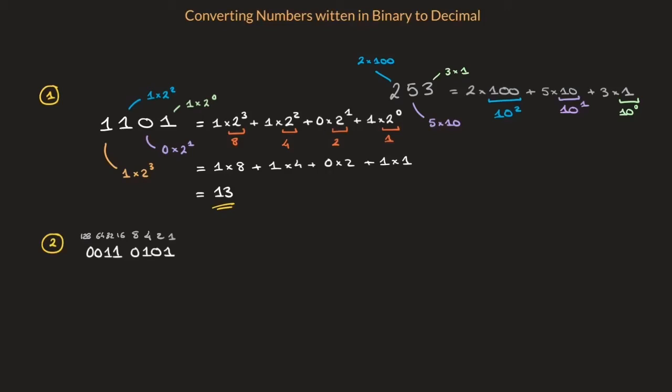Now that I've done that, it's quite easy to convert this into decimal. Indeed, I just need to state that this equals 0 times 128, so I don't need to write anything there, plus 0 times 64. No need to write anything there either. Plus 1 times 32. So I'll write that. That's 1 times 32.